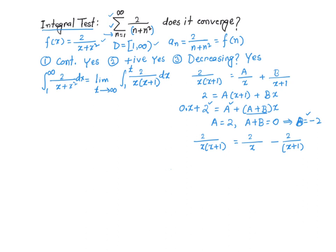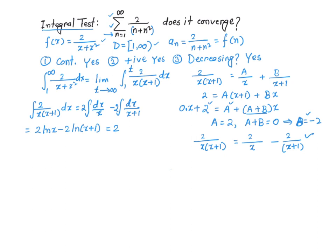Now I can take care of the integral. The integral of 2 over x times x plus 1 dx equals 2 times the integral of dx over x minus 2 times the integral of dx over x plus 1, which simplifies to 2 times ln of x minus 2 times ln of x plus 1. I don't need absolute value signs since x is greater than or equal to 1. Using logarithm properties, this is 2 times ln of x over x plus 1.